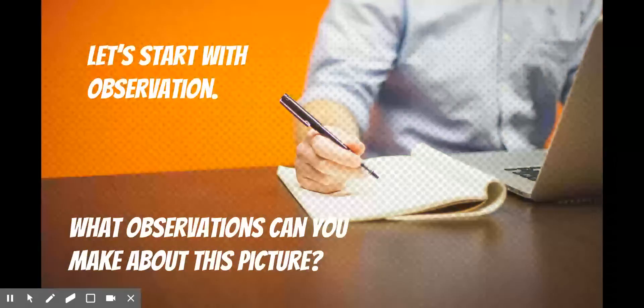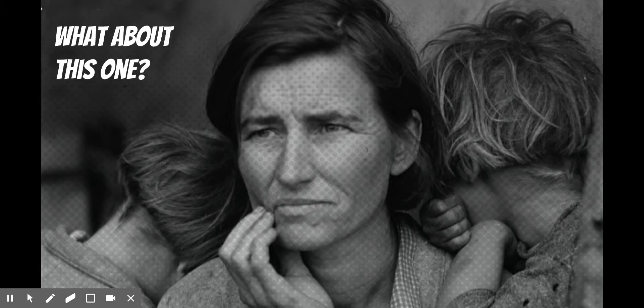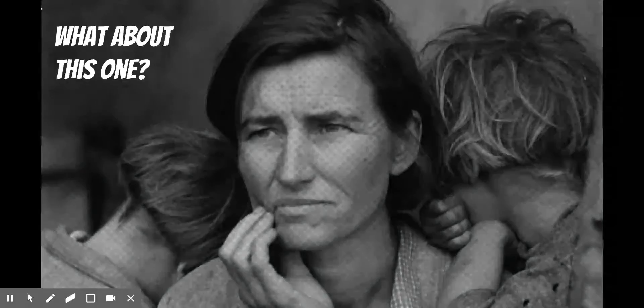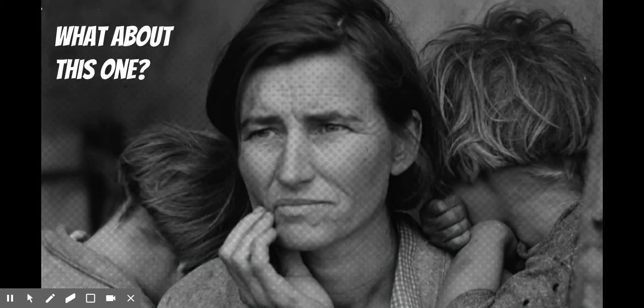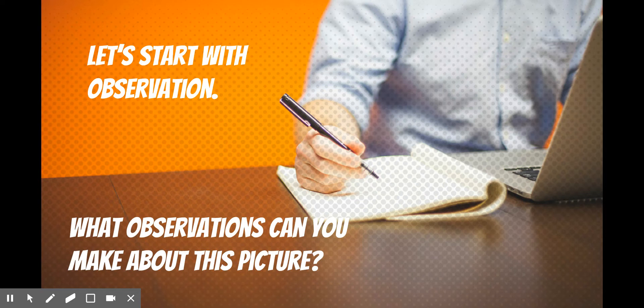Start with observation. What observations can you make here? What do you see? Don't think about what you can infer. What do you see, actually see? What about here? What observations do you see? You might, for example, see a person. Or you might think you see a person.